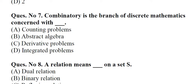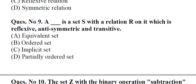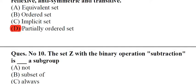Question number 7: Combinatorics is the branch of discrete mathematics concerned with underscore. A. Counting problems, B. Abstract algebra, C. Derivative problems, D. Integrated problems. Answer: A, Counting problems. Question number 8: A relation means underscore on a set S. A. Dual relation, B. Binary relation, C. Reflexive relation, D. Symmetric relation. Answer: B, Binary relation. Question number 9: A underscore is a set S with a relation R on it which is reflexive, anti-symmetric and transitive. A. Equivalent set, B. Ordered set, C. Implicit set, D. Partially ordered set. Answer: D, Partially ordered set.